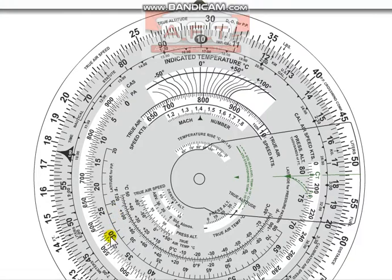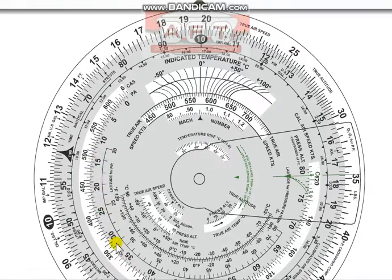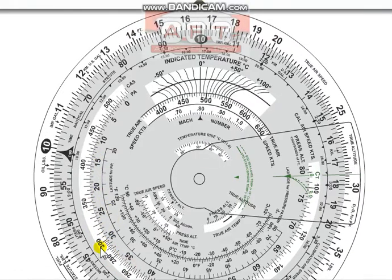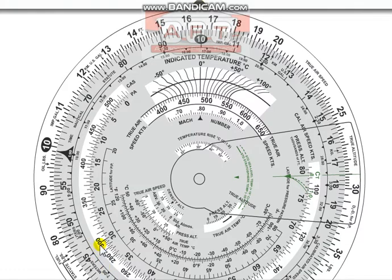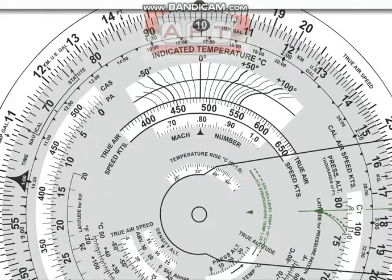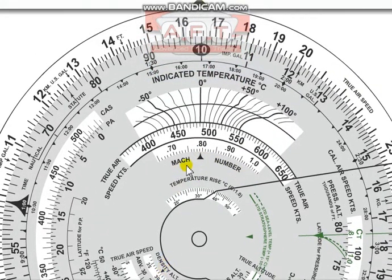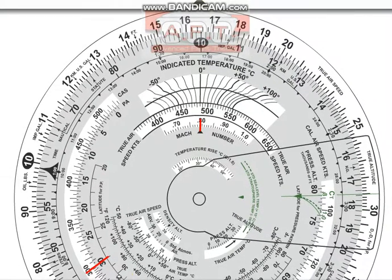For example, at 30,000 feet — that's flight level 300 — doing 300 knots CAS, I simply line up 300 on the CAS scale over 30,000 on the PA scale. Up on the Mach scale I get a value of about 0.79, just under 0.8. So if I'm doing 300 knots at 30,000 feet, that is equivalent to a Mach ratio of 0.79.